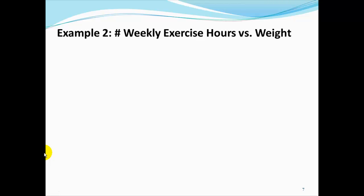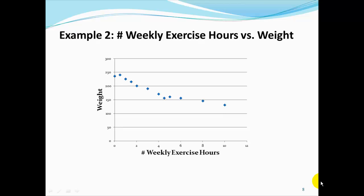In another example, we could explore the relationship between the number of weekly exercise hours and a person's weight. For this example, we would assume that a person's weight depends upon the number of weekly exercise hours. Therefore, we would consider weight our dependent variable y and the number of weekly exercise hours our independent variable x. If we were to collect a random sample and record weekly exercise hours and weight, we would expect to see patterns emerge similar to those shown on this slide — a person that exercises less has a higher weight and a person that exercises more has a lower weight.